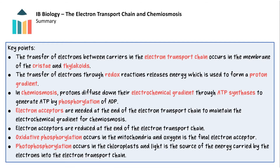In summary: the transfer of electrons between carriers in the electron transport chain occurs in the membranes of the cristae and thylakoids. Electron transfer through redox reactions releases energy used to form a proton gradient. Chemiosmosis is when protons diffuse down the electrochemical gradient through ATP synthases to generate ATP by phosphorylation of ADP. Electron acceptors at the end of the chain maintain the electrochemical gradient. Oxidative phosphorylation occurs in the mitochondria with oxygen as the final electron acceptor, while photophosphorylation occurs in the chloroplast with light as the energy source.